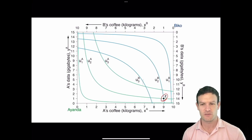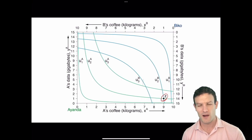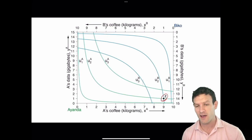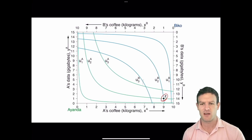Ianda had nine units of X and one unit of Y. Biko had 14 units of Y and one unit of X. That's what happens at point Z.